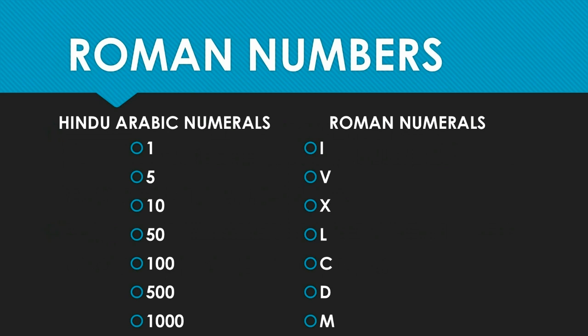For one we use I, for five we use V, for ten we use X, for fifty we use L, for one hundred we use C, for five hundred we use D, and for one thousand we use M. So these are the main important Roman numerals. If you know these, you can easily do the rest of the numbers.